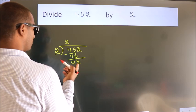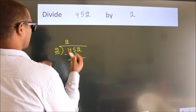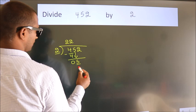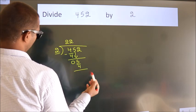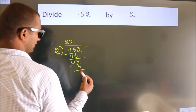A number close to 5 in 2 table is 2 times 2, 4. Now we subtract. We get 1.